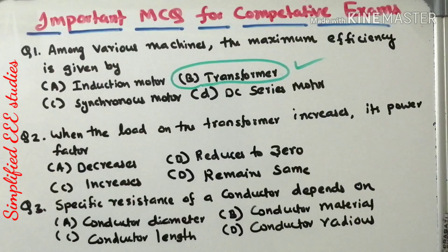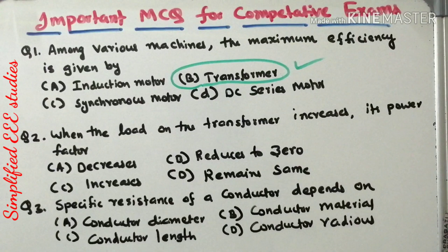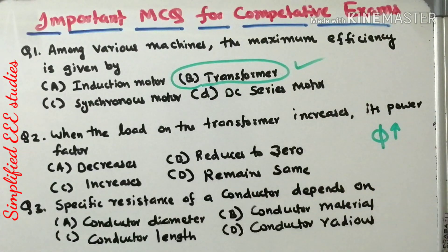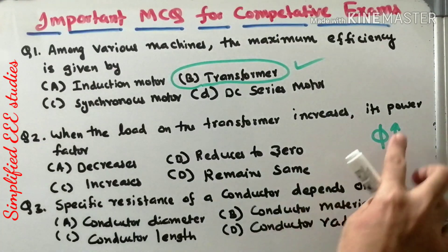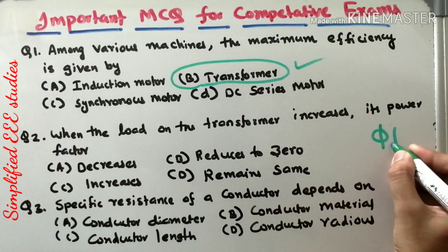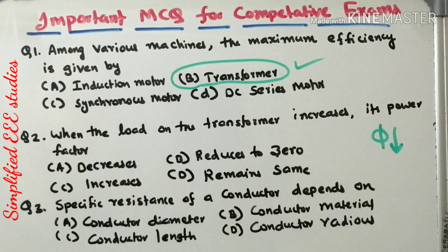At no load condition, there will be a phase difference between voltage and current — phi will be high. Whenever load is applied at the secondary side, the phase angle difference between voltage and current gets reduced.